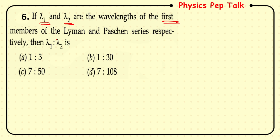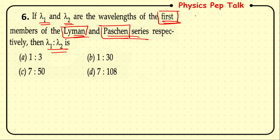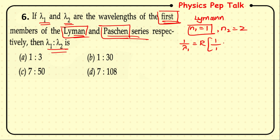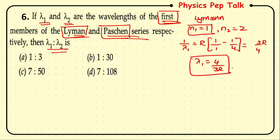Next: if λ₁ and λ₂ are the wavelengths of the first members of the Lyman and Paschen series respectively, find λ₁ : λ₂. For the Lyman series, n₁ = 1; for the first member, n₂ = 2. So 1/λ₁ = R(1 − 1/4) = 3R/4, giving λ₁ = 4/3R (equation 1).